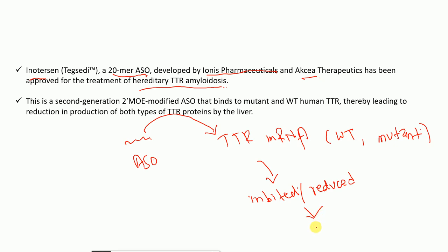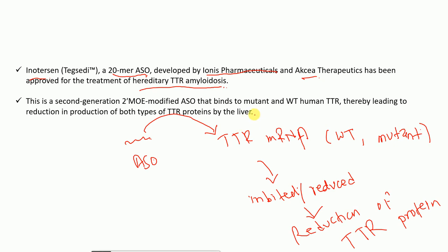Inhibiting TTR mRNA leads to reduction of transthyretin protein production, which is beneficial because increased transthyretin production is the underlying problem in hereditary transthyretin amyloidosis. In summary, antisense oligonucleotides target mRNA to reduce or inhibit target mRNA production, ultimately reducing target protein production, and this can be utilized in the treatment of various diseases.